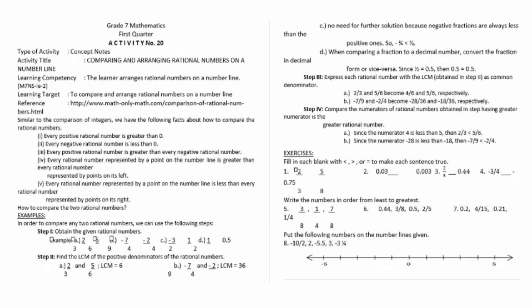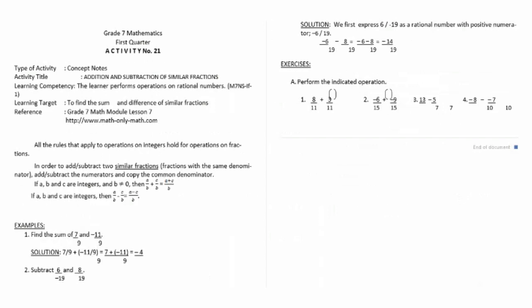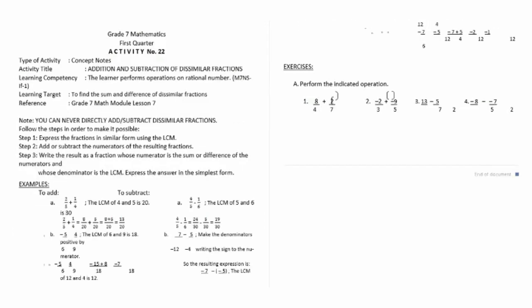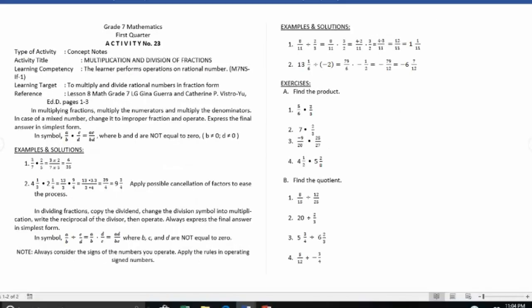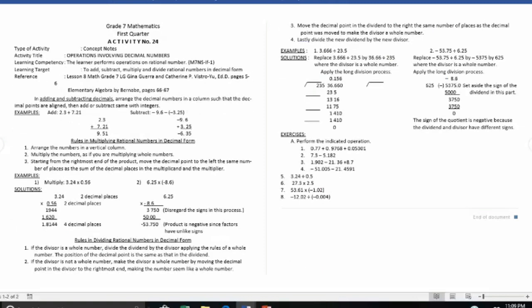Activity number twenty is comparing and arranging rational numbers on a number line. Activity number twenty-one is addition and subtraction of similar fractions. Activity number twenty-two is addition and subtraction of dissimilar fractions. Activity number twenty-three is multiplication and division of fractions.